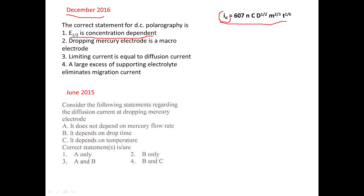The diffusion current ID is actually dependent on concentration, as you can see in the equation. Next: the dropping mercury electrode is a macro electrode — this is also incorrect. As I've explained in previous lectures, the dropping mercury electrode is actually a micro electrode because it is just a single drop. And limiting current equals diffusion current — this is totally wrong.